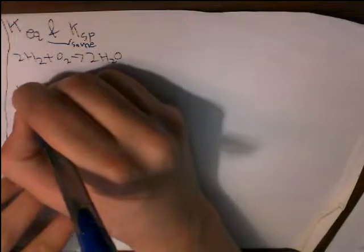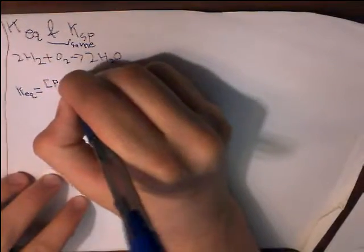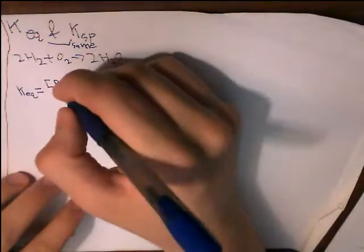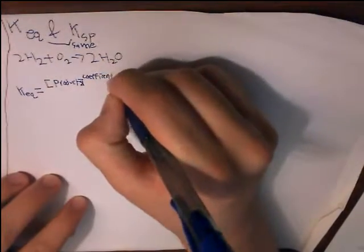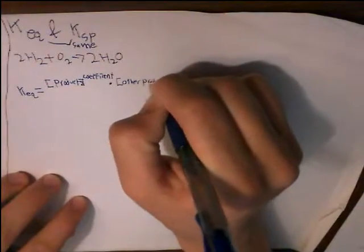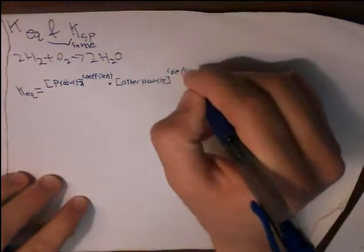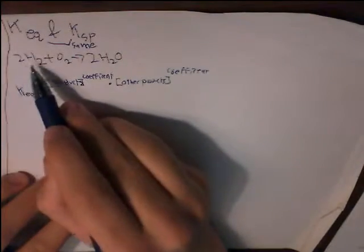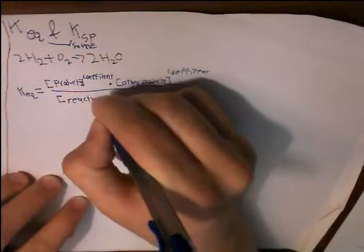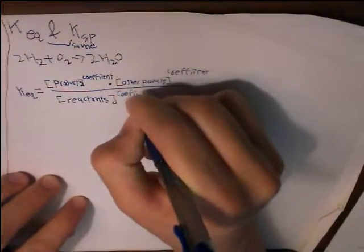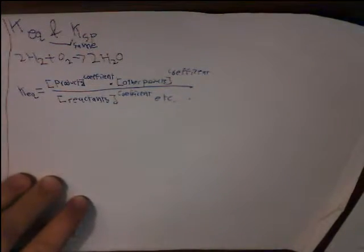So the idea is that KEQ equals products, these will all be molarities, to the power of the coefficient, times other products. And you can have as many as you need, let's say you have 50 products and you'll have 50 terms, and always to the coefficient. In this case, H2's coefficient is 2. And it's over the same thing, reactants to the coefficient, that should be 2Fs, etc. So you can see how this gets put into play.